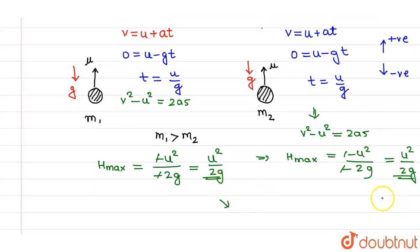And you can clearly see that the maximum height expression is same for both the balls. And it is also independent of mass. It is also independent of mass of the ball. So whatever is the mass of ball, the maximum height attained will be same.